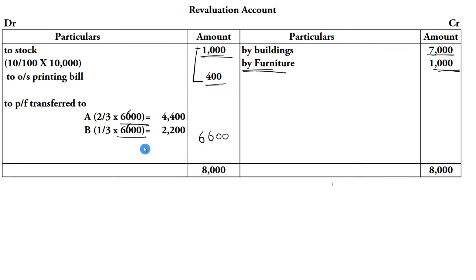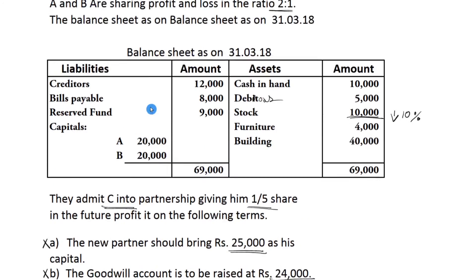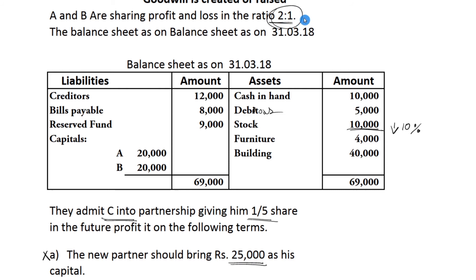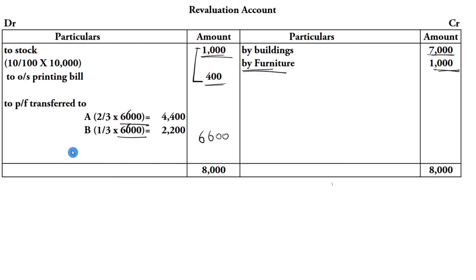6,600 rupees profit is transferred to partners capital account in old profit sharing ratio of 2:1, that is 2/3 and 1/3. So 6,600 into 2/3 = 4,400 for A. 6,600 into 1/3 = 2,200 for B. Add 4,400 and 2,200 = 6,600. Revaluation account complete.